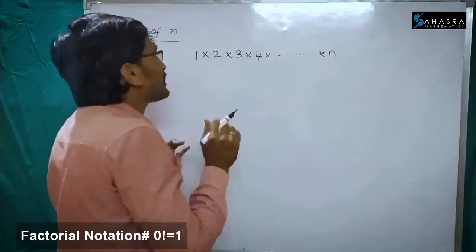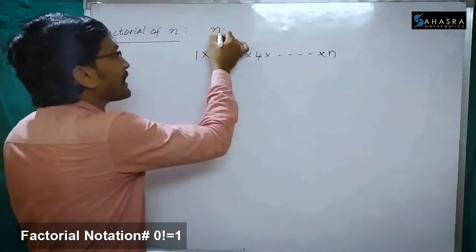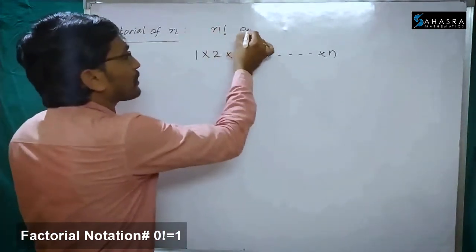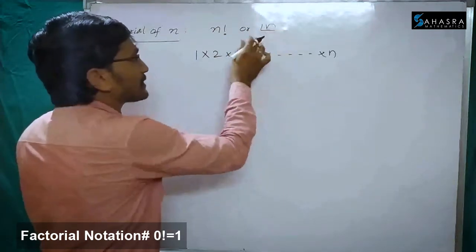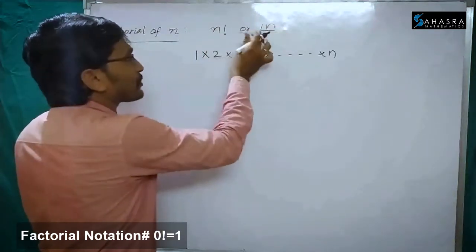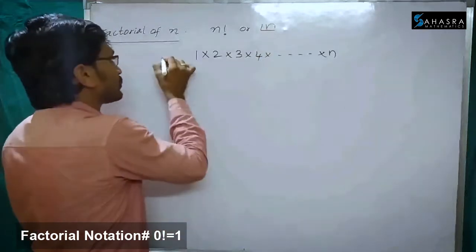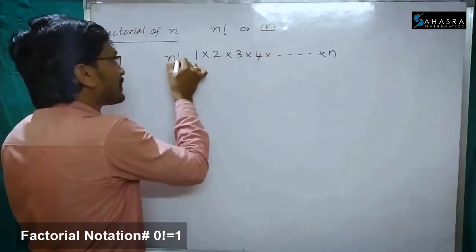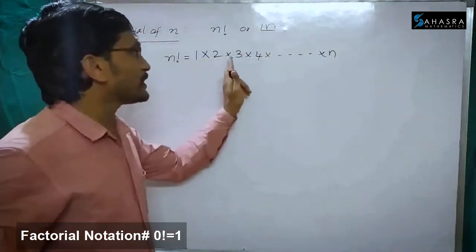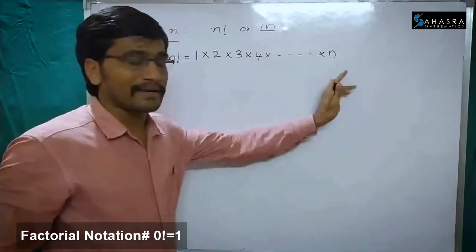Factorial of n is generally denoted by n factorial. Like this we can denote n factorial or factorial n. So n factorial is equal to 1 into 2 into 3 into 4 into and so on into n.